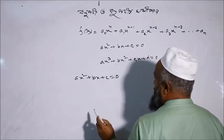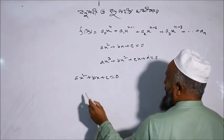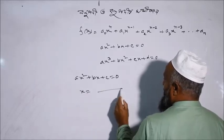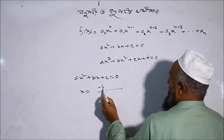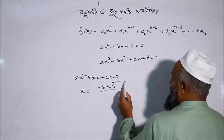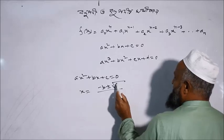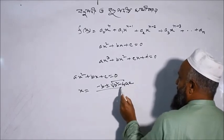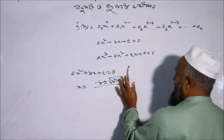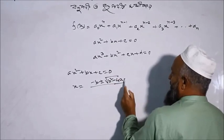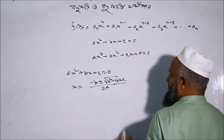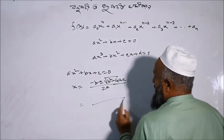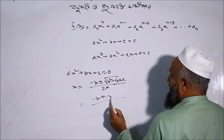To solve this equation (ehi shumikoran ke shamadhan), we use the formula: x is equal to minus b plus-minus square root of b squared minus 4ac, divided by 2a.